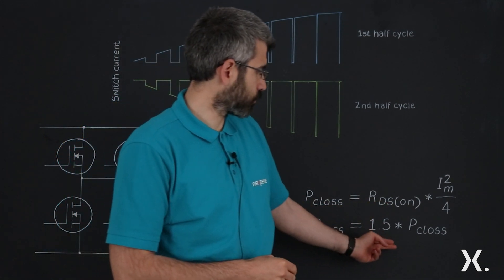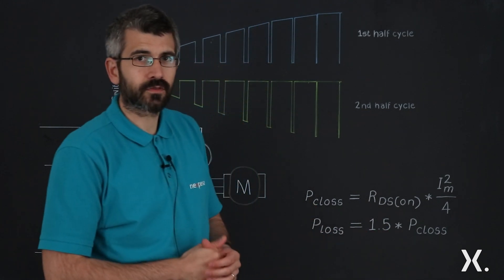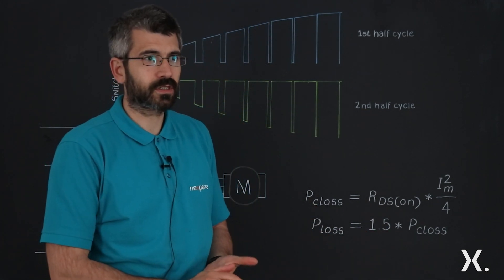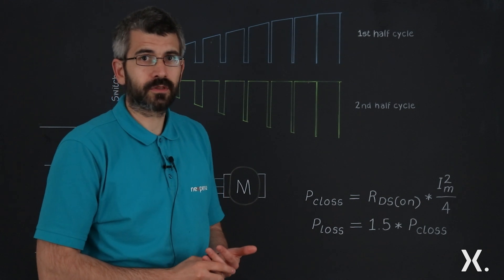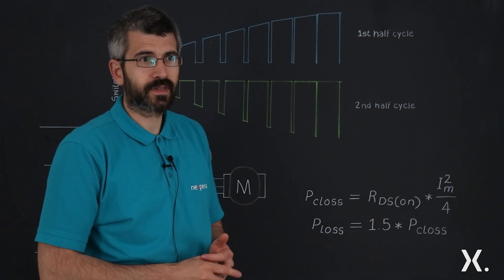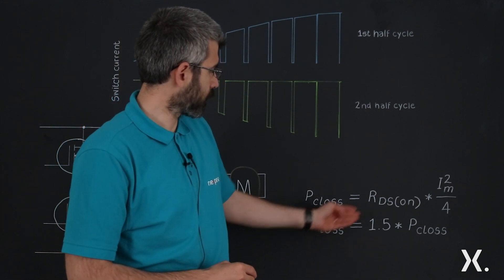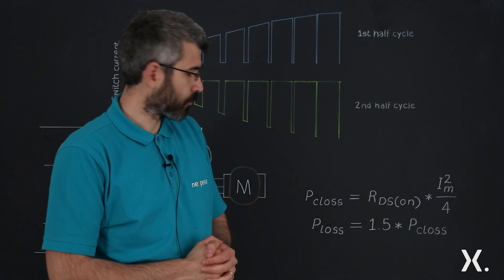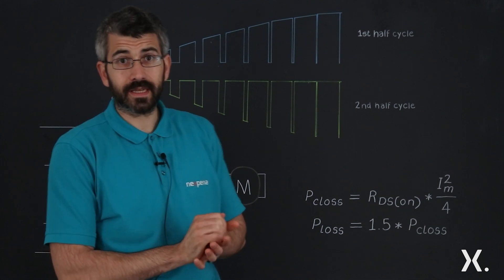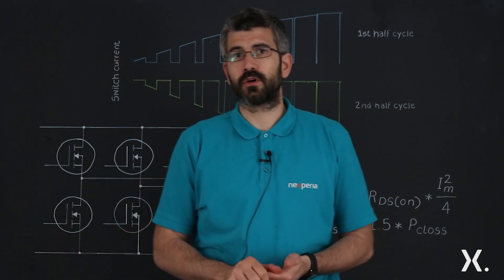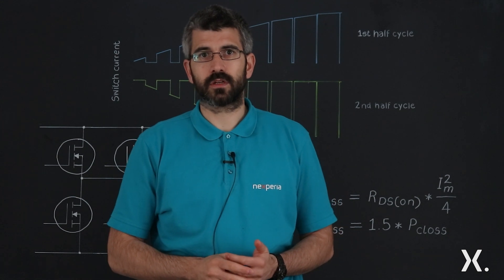And if we account to the switching losses as 50% of the conduction losses, we get total losses. These total losses are usually determined by the cooling arrangement of the MOSFETs, and we can work ourselves back towards the RDS-ON from there. We can then select the MOSFET and use the model to accurately simulate the switching losses.